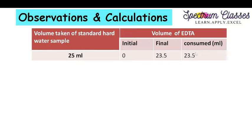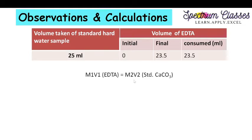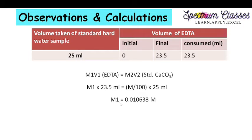For this titration, I took 25 mL of standard hard water sample. The initial reading of the burette was 0 and the final reading at the end point is 23.5. Subtracting initial from final gives the volume of EDTA consumed against 25 mL of standard hard water, which is 23.5 mL. Applying the molarity equation M1V1 = M2V2 — on one side EDTA, on the other standard calcium carbonate — and putting in all values, I get the molarity of the EDTA solution. I had prepared 0.01 M but the actual concentration is 0.010638 molar. That is why we need to standardize our solutions to know the exact concentration.